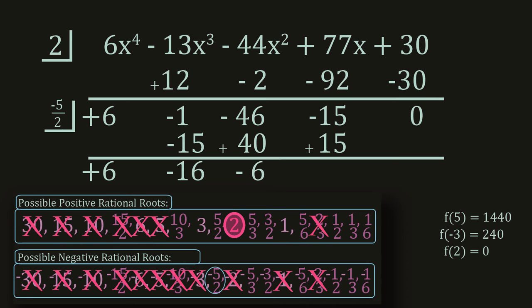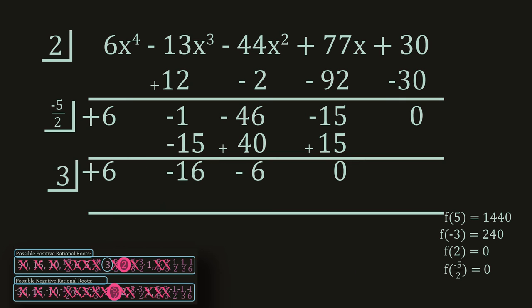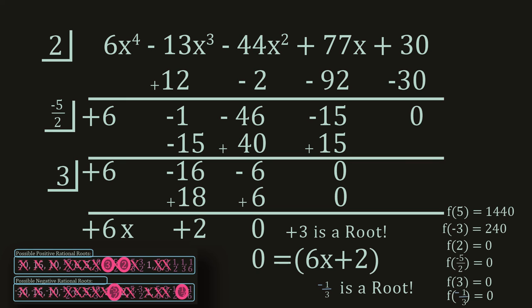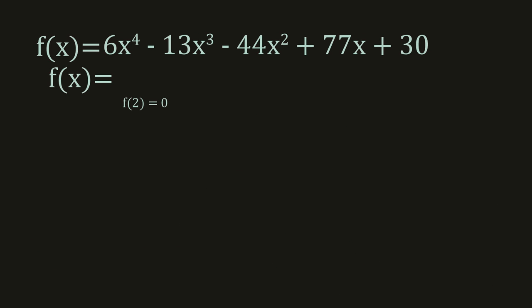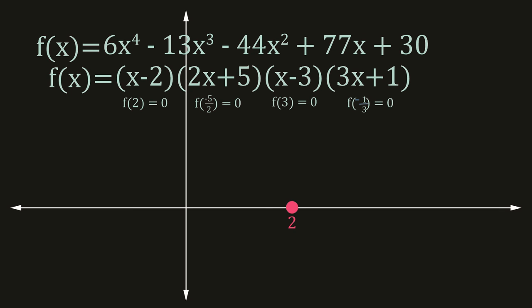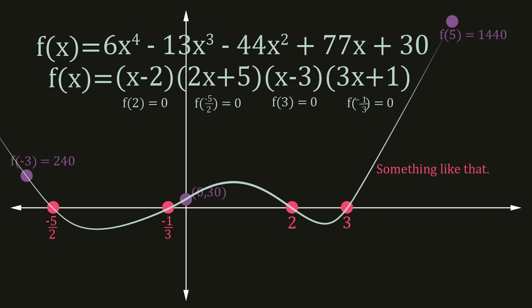Synthetic division, I'll take my decision. A factor removed is a zero in vision. Add it down, multiply, bring it up to the right. Add it down, multiply, bring it up to the right. Add it down, multiply, bring it up to the right.